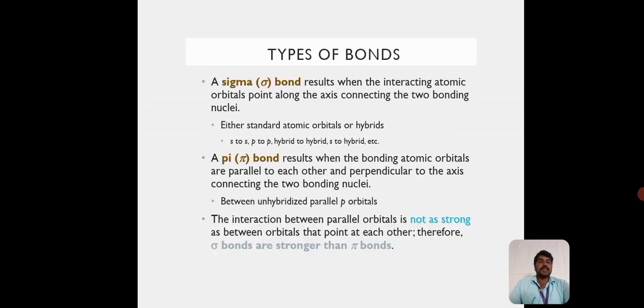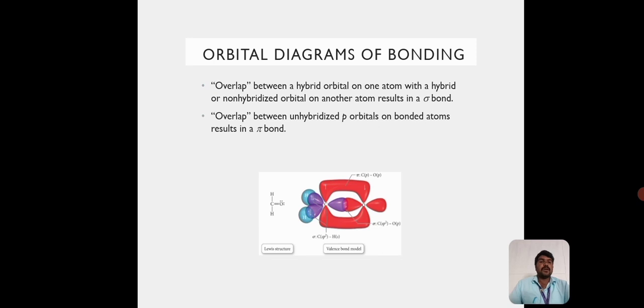Types of Bonds. There are two types of bonds present. One is the sigma bond and another is the pi bond. Orbital Diagrams of Bonding. Overlap between a hybrid orbital of one atom with a hybrid or non-hybridized orbital on another atom results in a sigma bond. Overlap between unhybridized p orbitals on bonded atoms results in a pi bond.